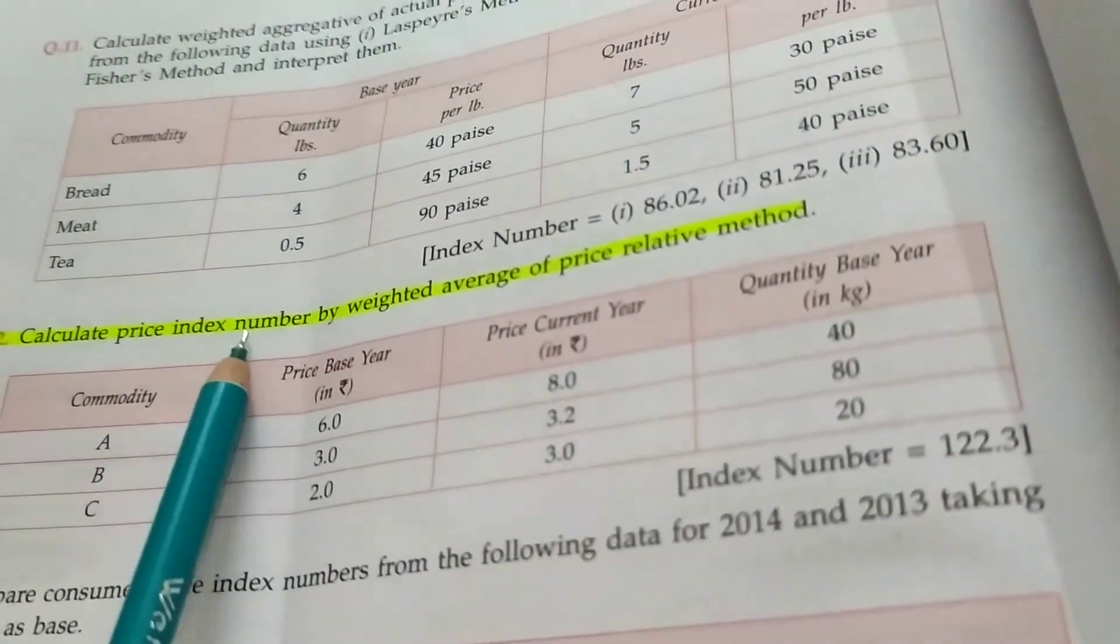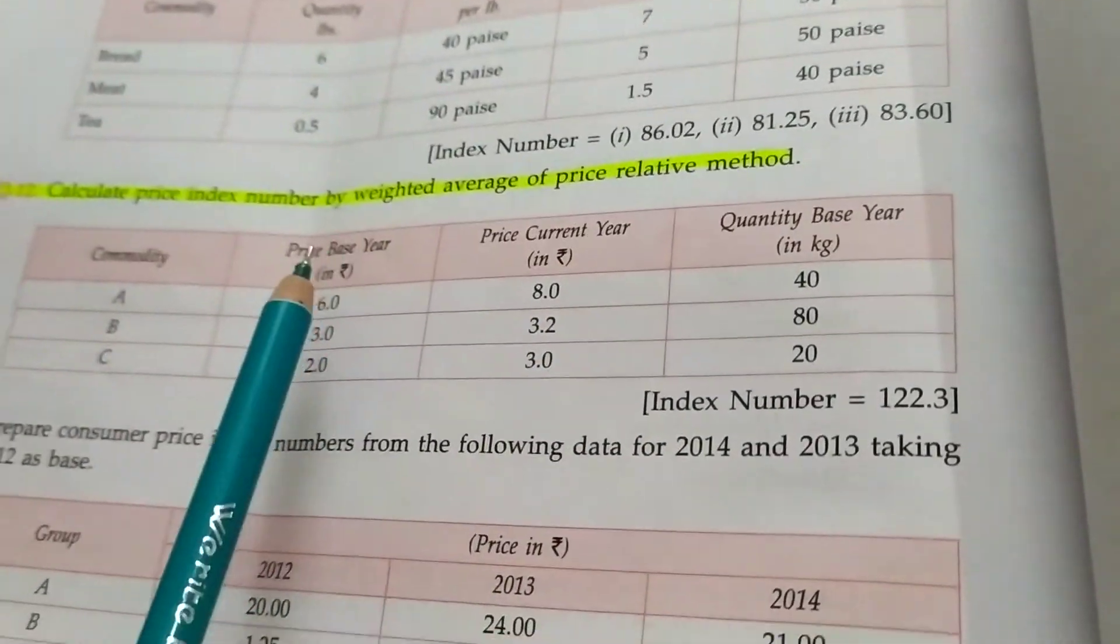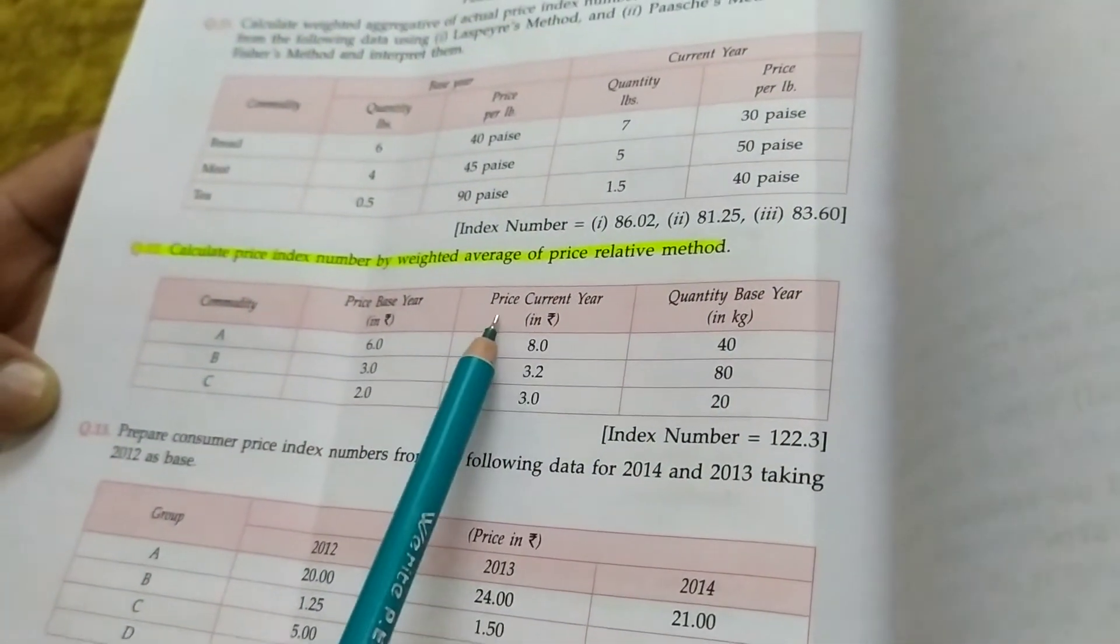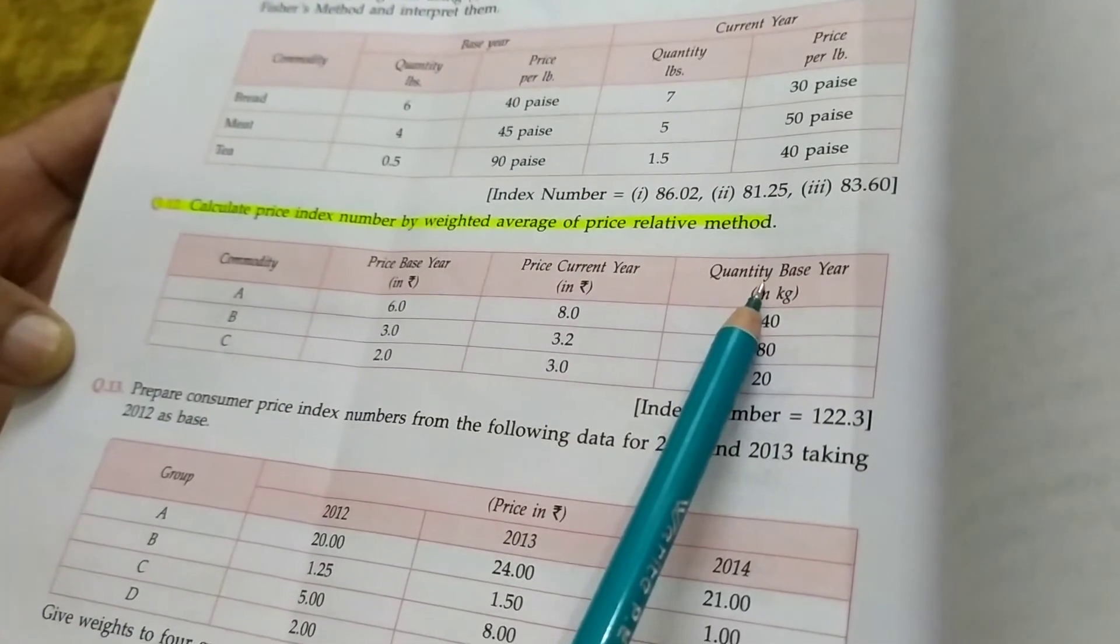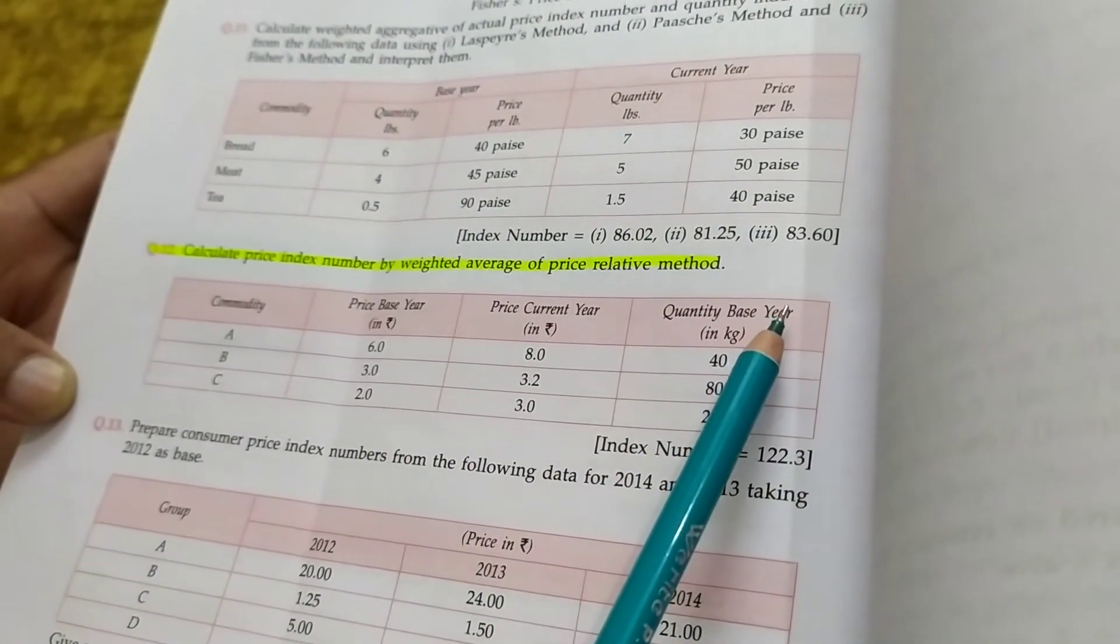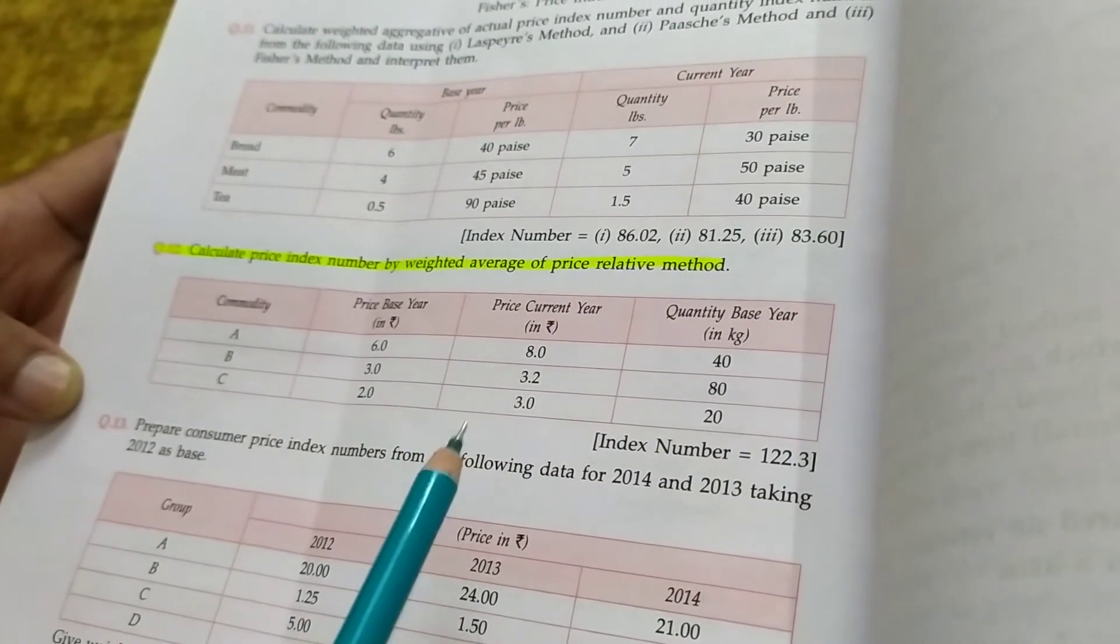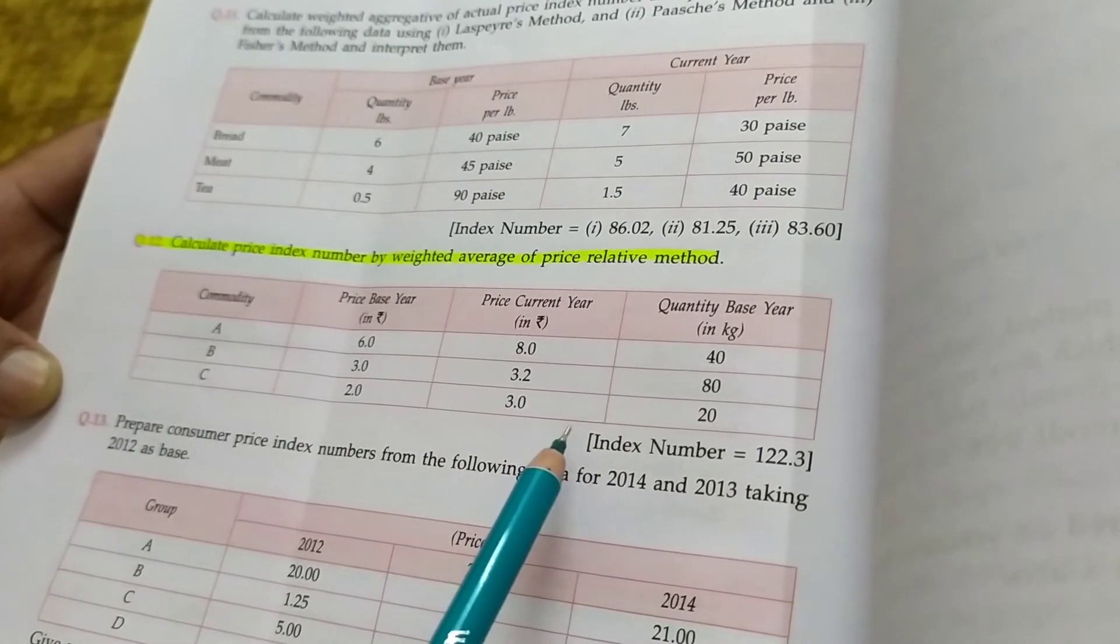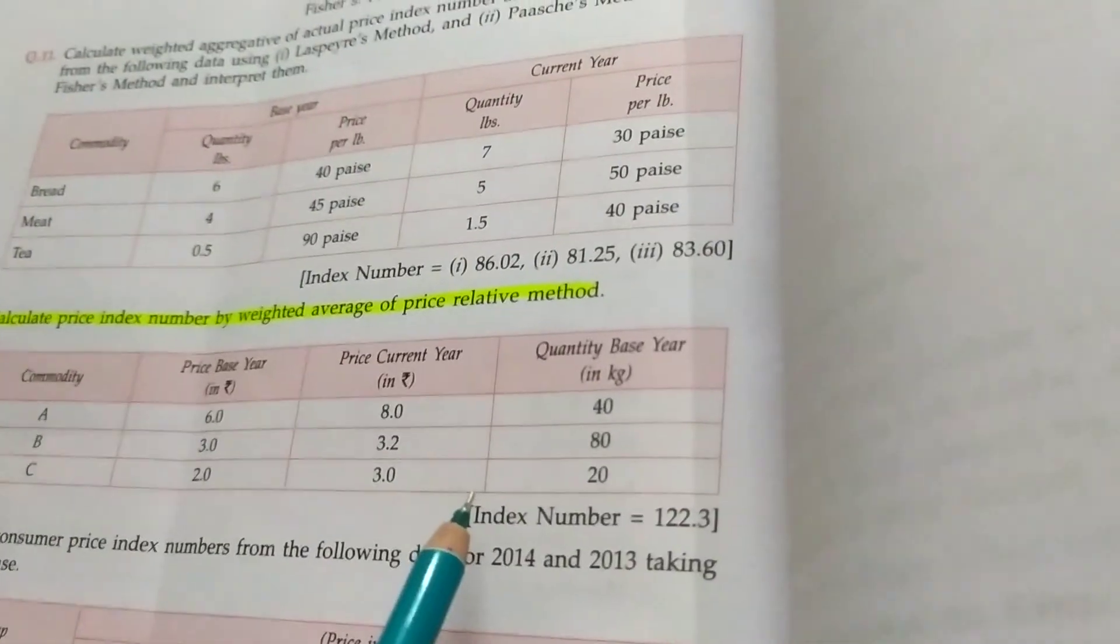The next column would be of PV, and then you will apply the formula P01 equal to sigma PV upon sigma V, and then you will interpret it. So dear students, that's all for today. We have finished index number. Thank you.